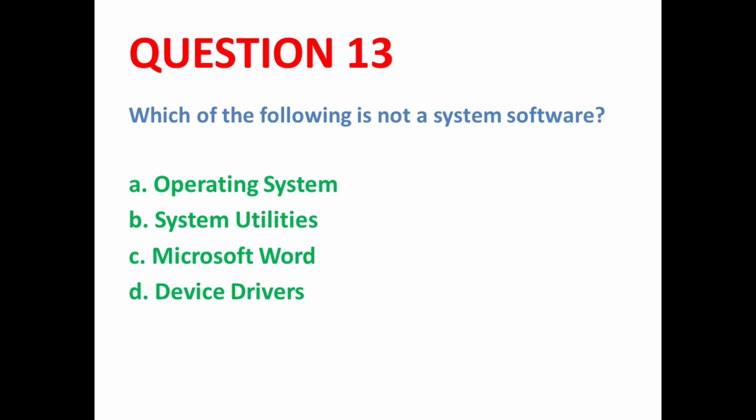Next MCQ: Which of the following is not a system software? System softwares are those which help with computer hardware working and provide a platform for application softwares — like operating system, system utilities, and device drivers. But Microsoft Word is an application software, not a system software. So here option C is the correct option.